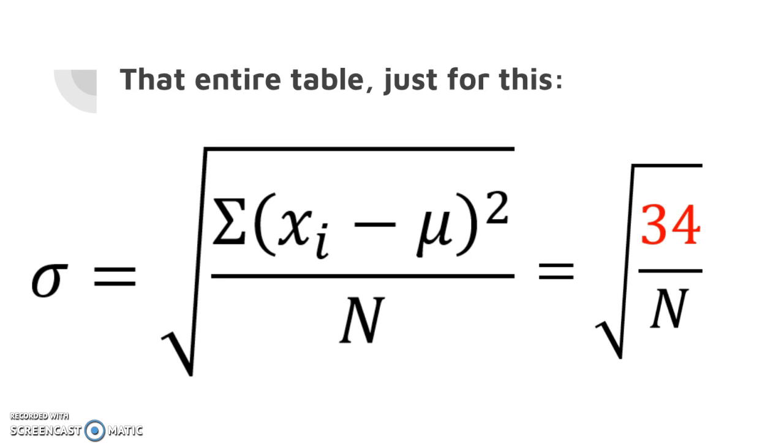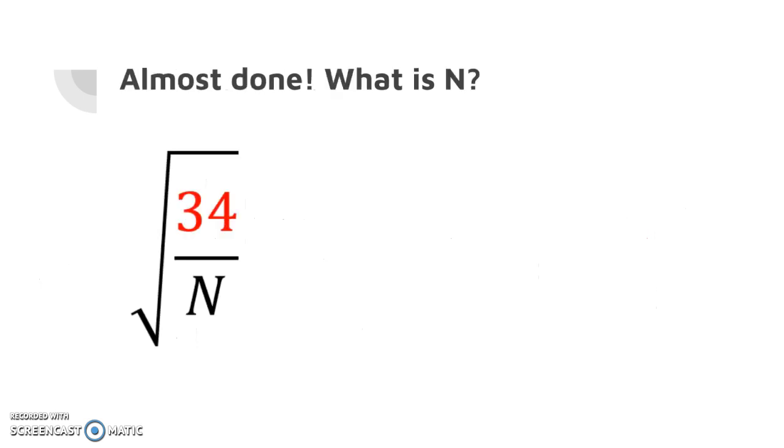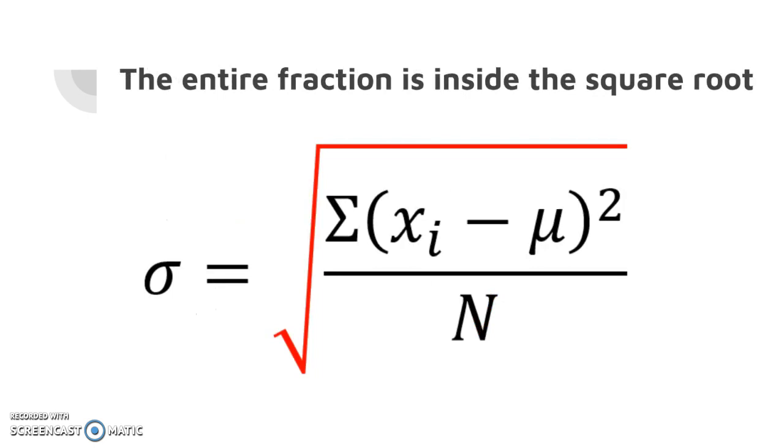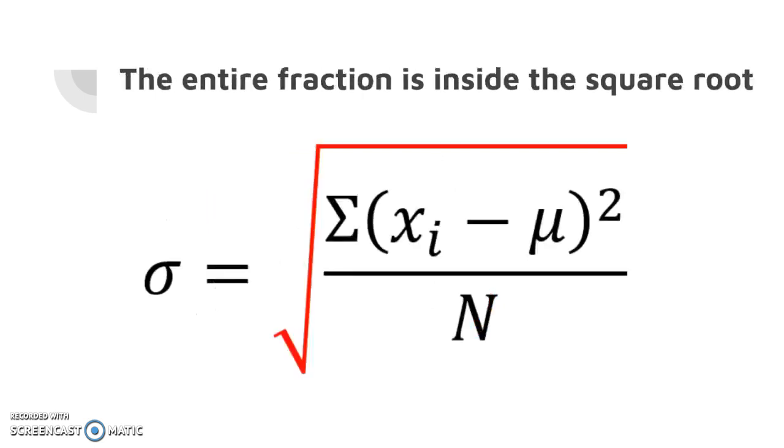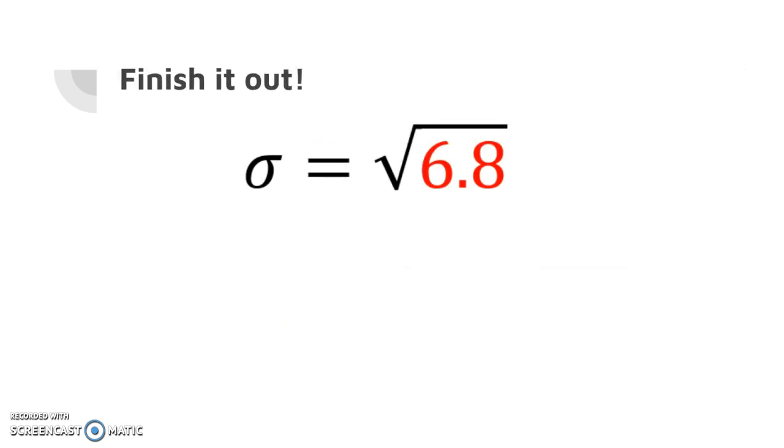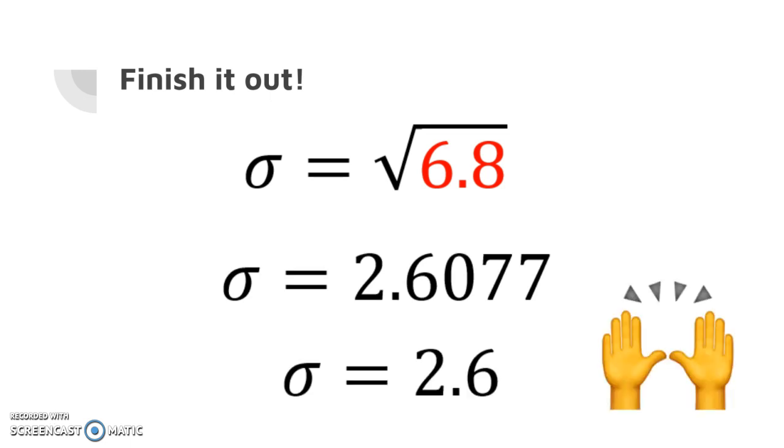The n, like we said earlier, was pretty easy. N is how many numbers do we have? We had five data points. But do notice order of operations says the reason that this square root is big - the fraction is entirely within the square root. We need to keep that in mind. That means we need to do the 34 divided by 5, we need to do that first, and then we can take the square root. So let's take 34 divided by 5. It turns out to be 6.8. We take the square root of 6.8, it's 2.6077. Then we can go ahead and round that to 2.6. You found the standard deviation. Congratulations.